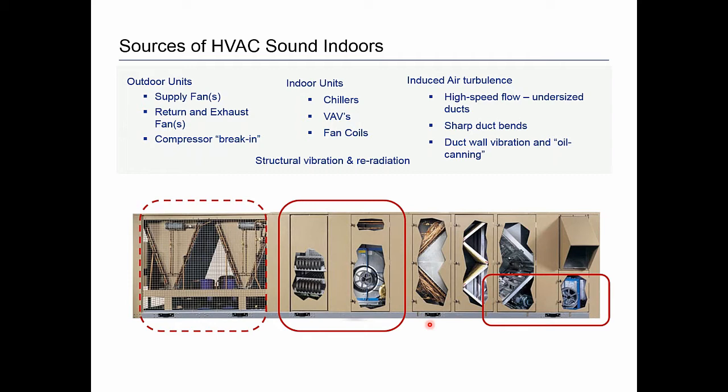With indoor units, noise can come from chillers, variable air volume boxes, and fan coils. Noise can be induced by air turbulence, which is particularly a problem with high-speed flow and undersized ducts. Very sharp duct bends also generate a great deal of turbulence that can turn into noise. If the turbulence is low enough in frequency or pulsation rate, it can induce actual duct wall vibration or oil canning. Finally, there are many paths by which structures can vibrate and then re-radiate sound indoors.